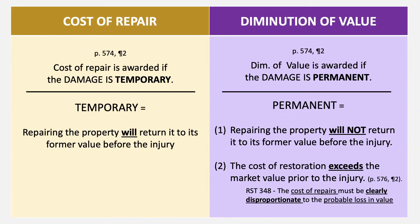Step one is always to determine if the property is permanently or temporarily damaged. After that, you go to step two: actually measuring the damage, which is either the cost of repair or diminution of value. The formulas for how to measure them are on page 572.